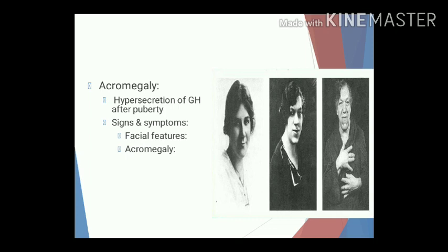The signs and symptoms include facial features — the person has an acromegalic face characterized by thick lips, macroglossia (enlarged tongue), broad and thick nose, prominent eyebrows and supraorbital ridges, thick skin, and coarse facial features, as seen in the picture.